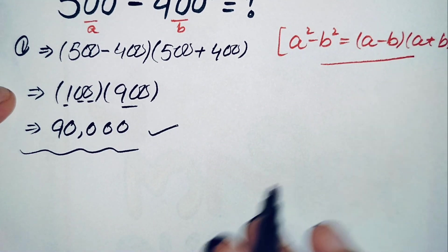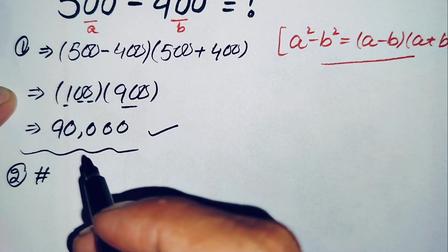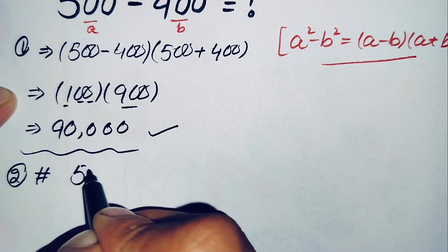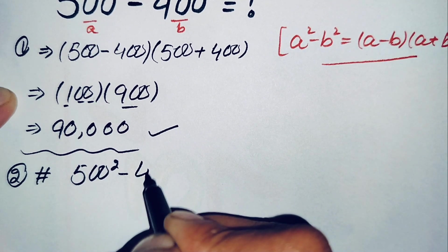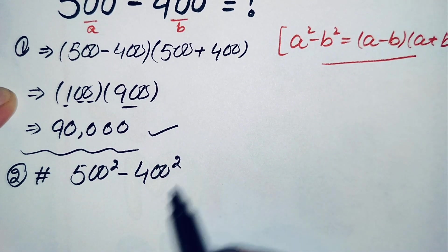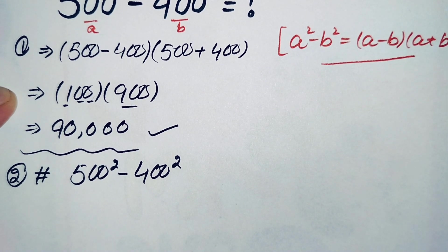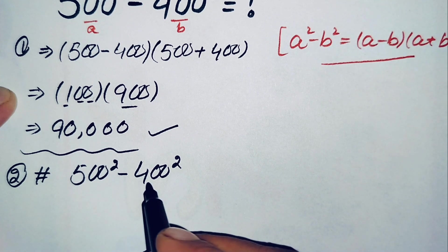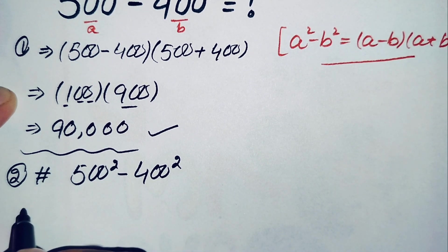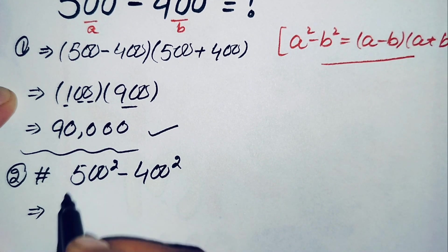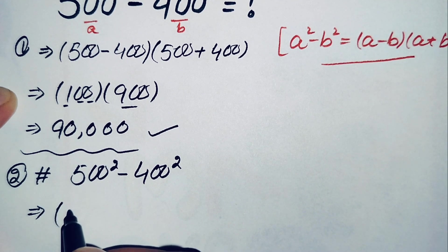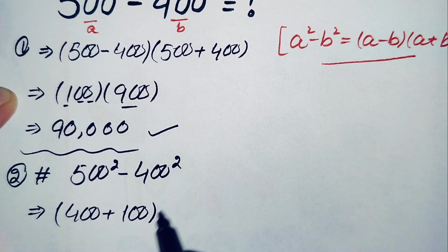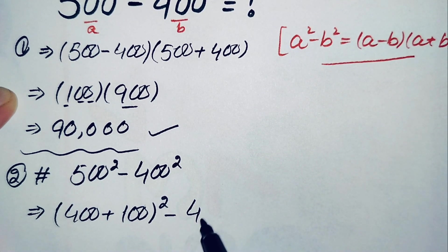Now we will try to solve this problem using the second method. We again have 500 squared minus 400 squared. In the second method we will change 500 to the sum of 400 plus 100.